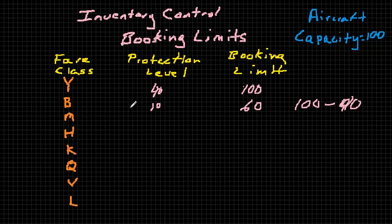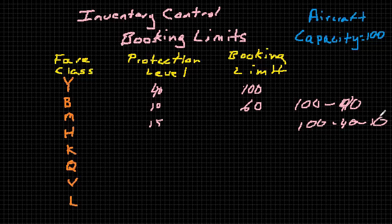And we can continue on — let's say the airline wants to protect 15 seats for the M-class. The same logic applies: the booking limit is 100 minus 40 minus 10, so 50. The airline would be willing to sell up to 50 seats in the M-class, as those are the seats left after they've protected for the higher fare classes.